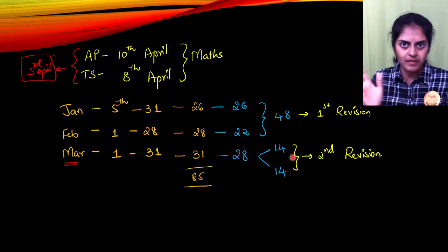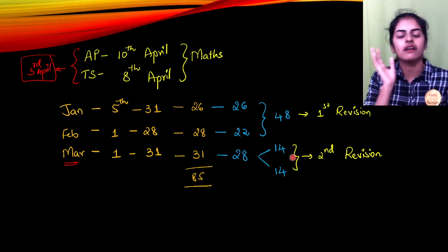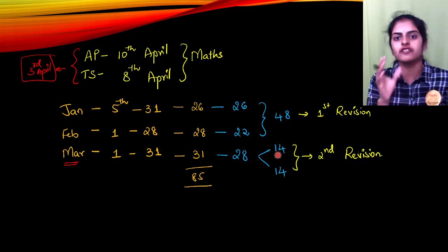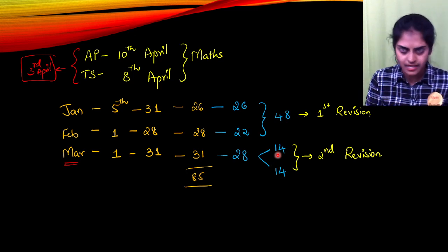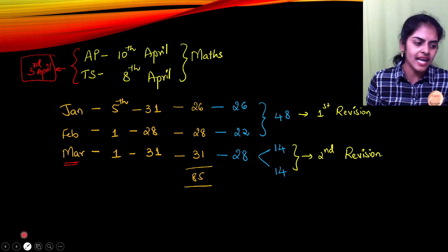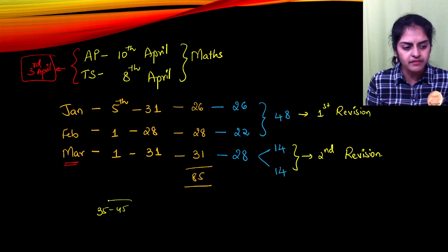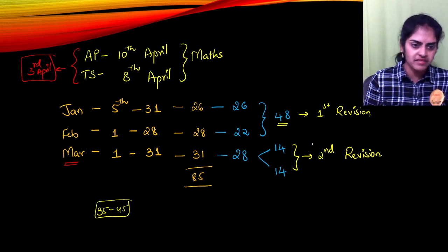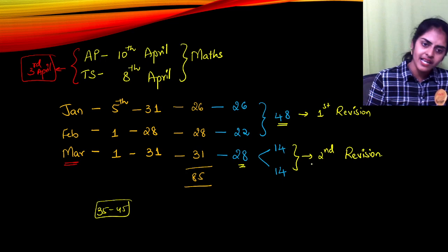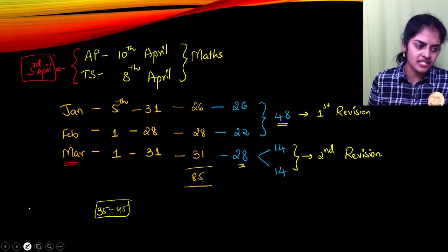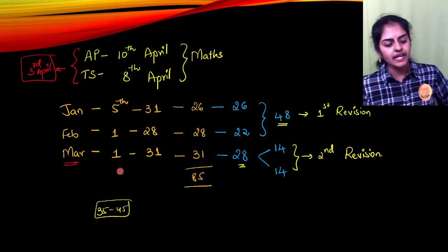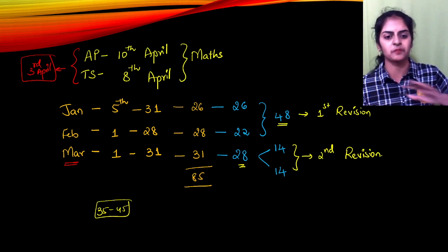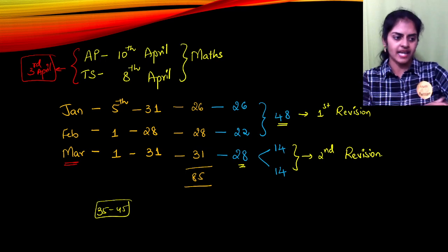We are not doing only math for three months and failing in other subjects — we shall do all subjects. On average, 35 to 45 minutes per day will be spent on math. January and February will complete the first revision, and the next 28 days in March will complete the second revision. In the second revision, we will do only the most important things — a true 10-on-10 revision.